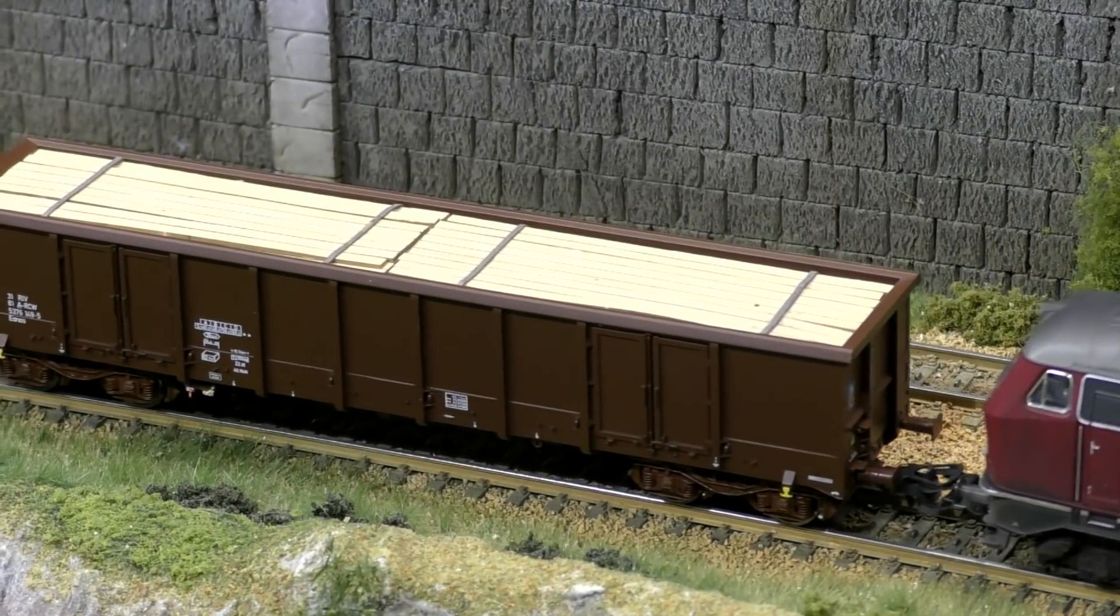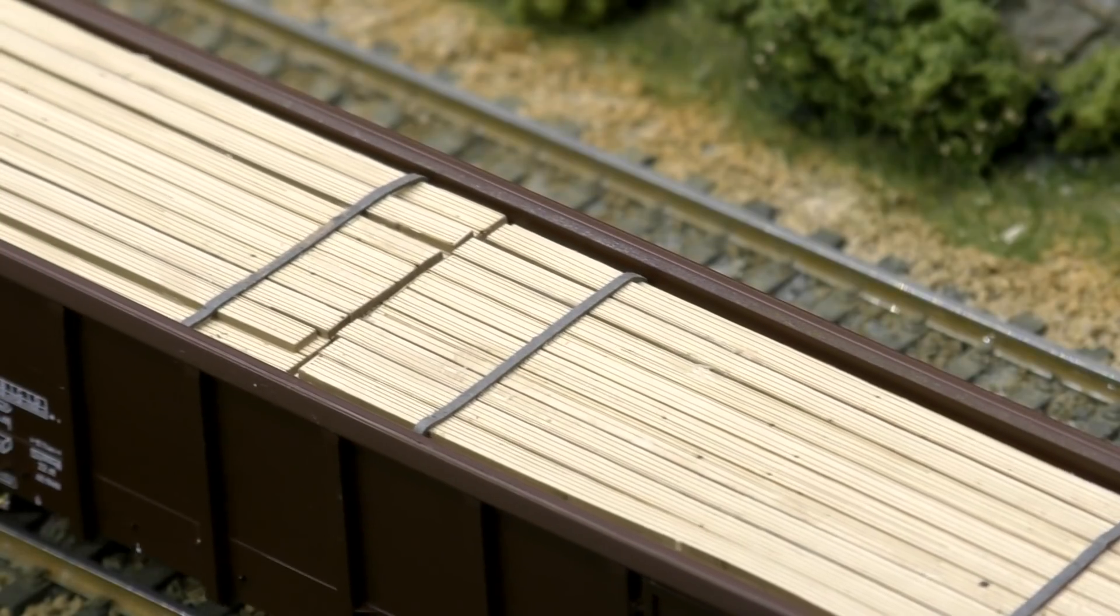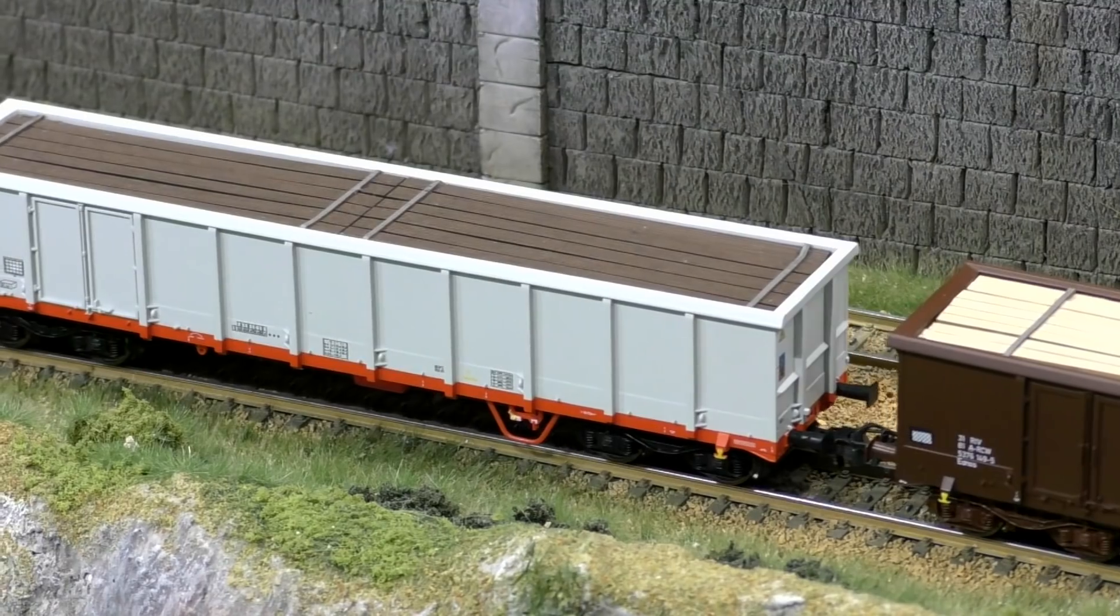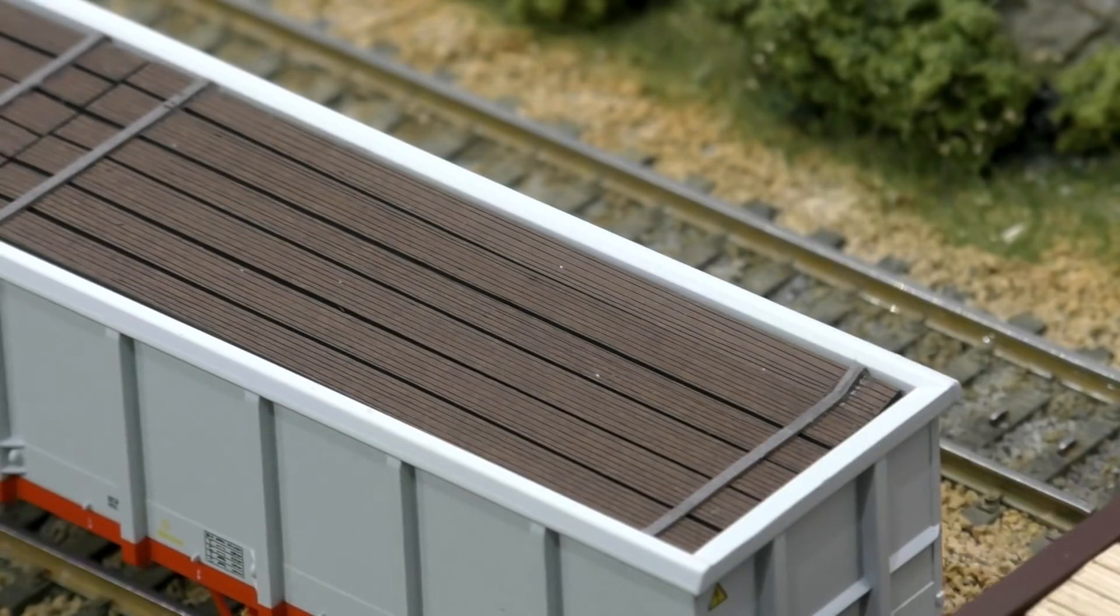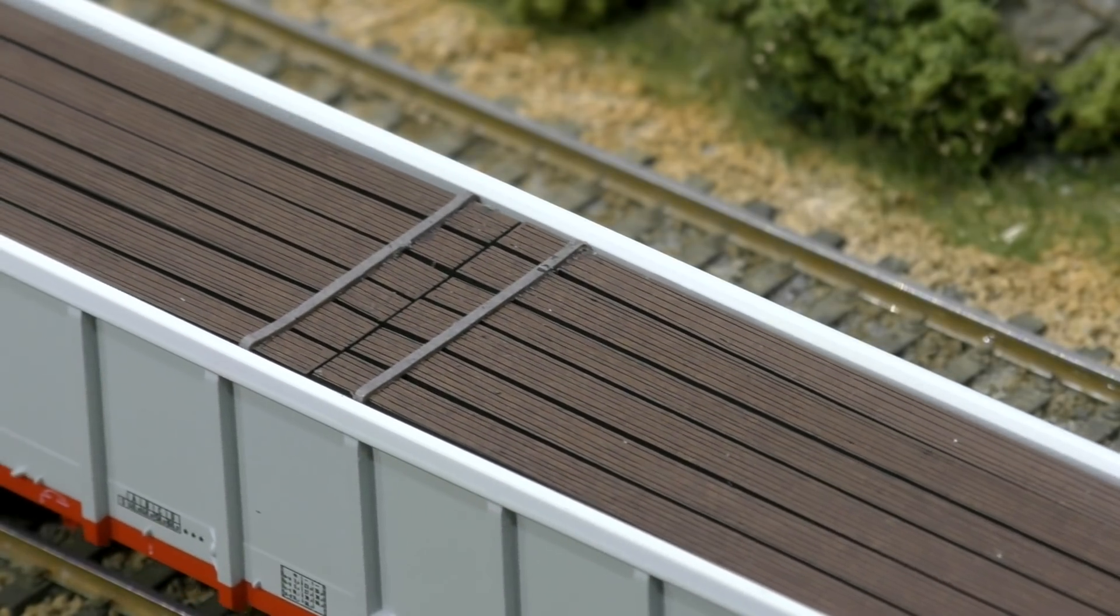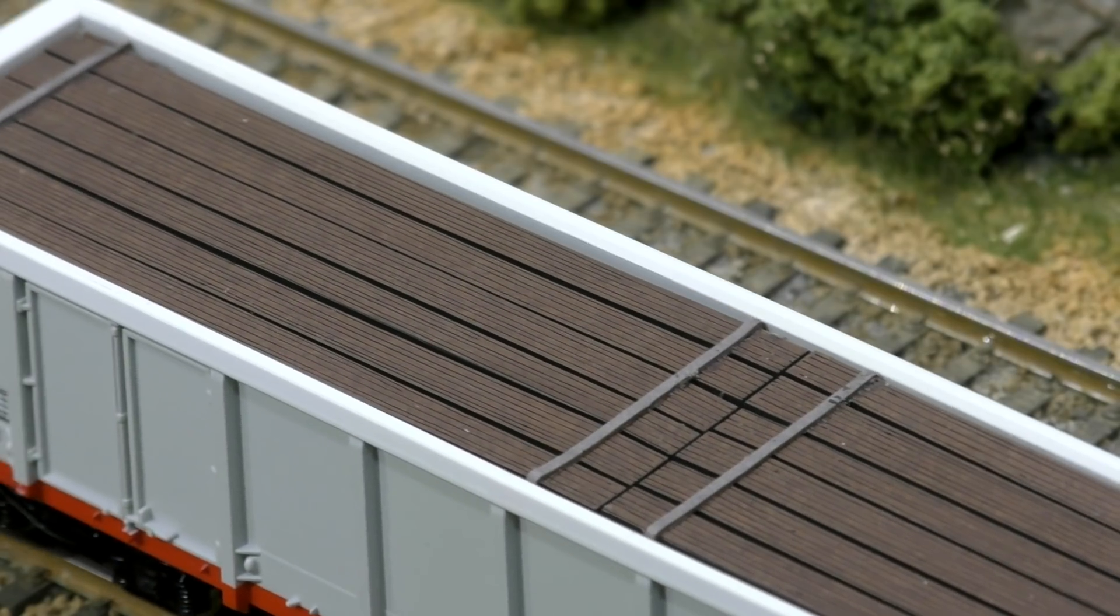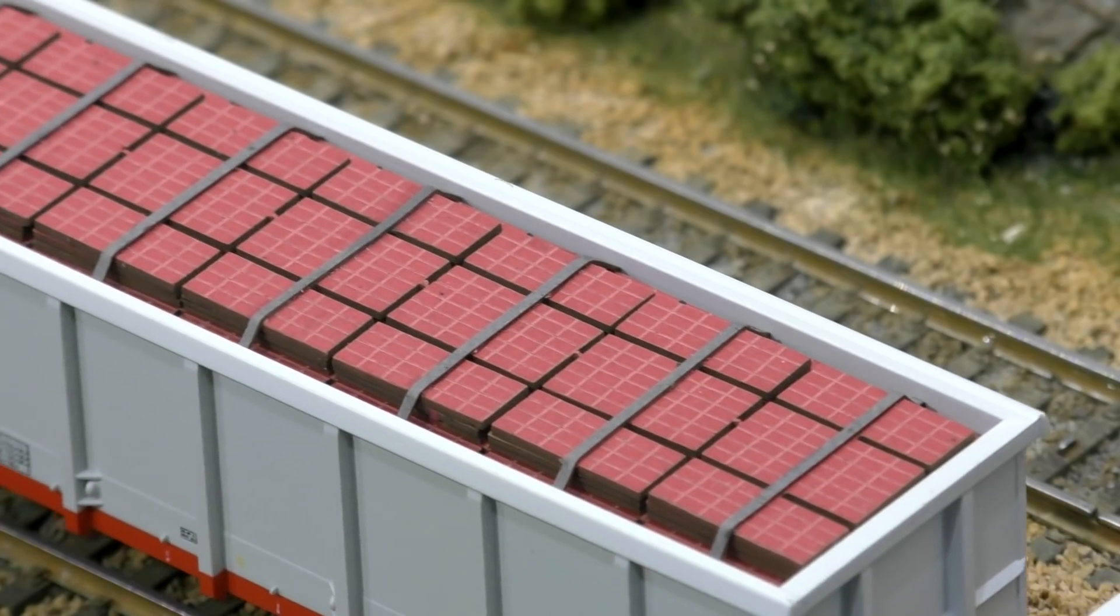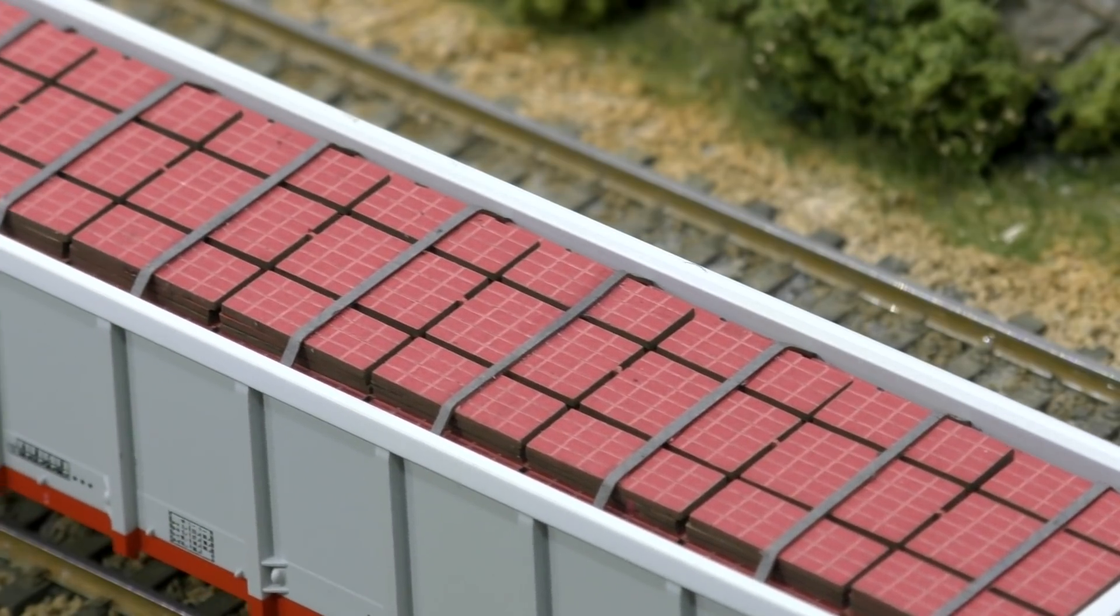Alright so let's go for some cargo parade. Here's the laser cut kits from Modellbahn Union. The light colored planks and the dark colored planks. You see the beautiful texture the laser cutter has made on these planks. Looks awesome. And the bricks with all its strapping.